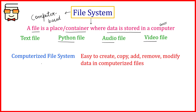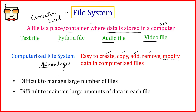What are the advantages of a computerized file system? These kinds of files are easy to create, easy to copy, add, and remove. It is easy to add new information, remove information, or modify existing information in computerized files as compared to manual or physical files. However, there are certain disadvantages of the file system as well.